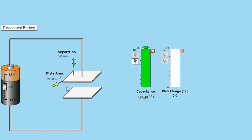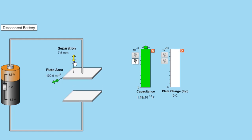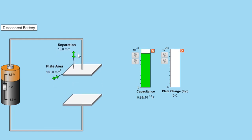So: if distance decreases, capacitance increases; if plate area increases, capacitance increases; if plate area decreases, capacitance decreases; if distance between the plates increases, capacitance decreases. So area and capacitance are directly proportional, and distance and capacitance are inversely proportional.